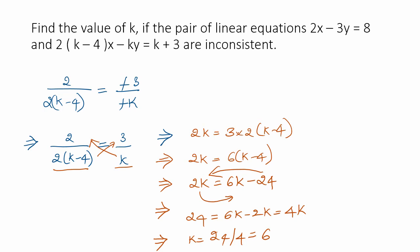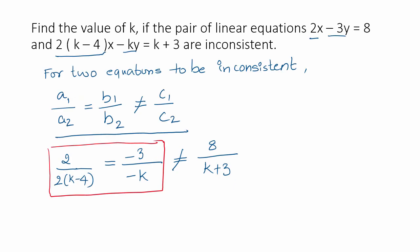So, k value is 6. This becomes 2 divided by 2 times 6 minus 4 equal to minus 3 divided by minus 6 not equal to 8 by 6 plus 3.